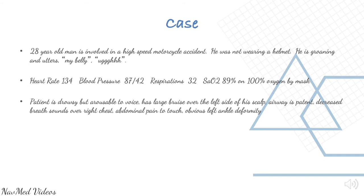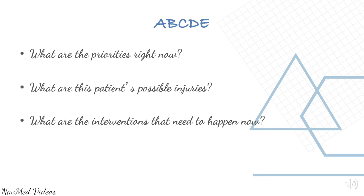Scenario: A 28-year-old man is involved in a high-speed motor vehicle accident, not wearing a helmet. He is groaning and says 'my belly.' Heart rate 134, blood pressure 87/42, respirations 32, oxygen saturation 89% on 100% by mask. The patient is drowsy but arouses to voice. He has a large bruise over the left side of his scalp, airway is patent, decreased breath sounds over the right chest, abdominal pain to touch, and obvious left ankle deformity. Always apply A, B, C, D, E: airway patent, go to mask, frequent reassessment, C-spine immobilization, then B, C, D, and E. This is all under primary survey.